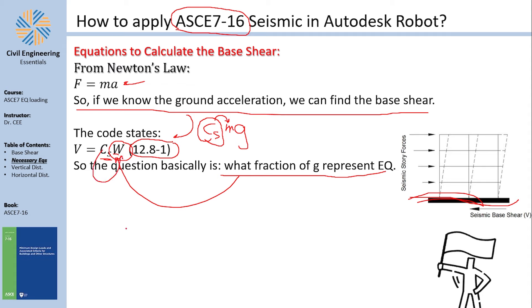Historically, Cs is usually between 5% and 25% of the weight of the structure — though values outside that range are possible. Those are typical values the speaker has encountered. Our objective is to find Cs.